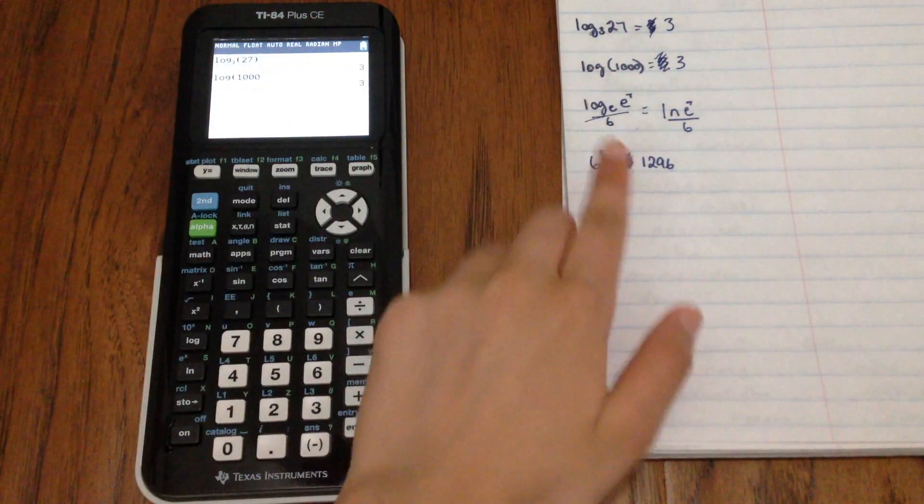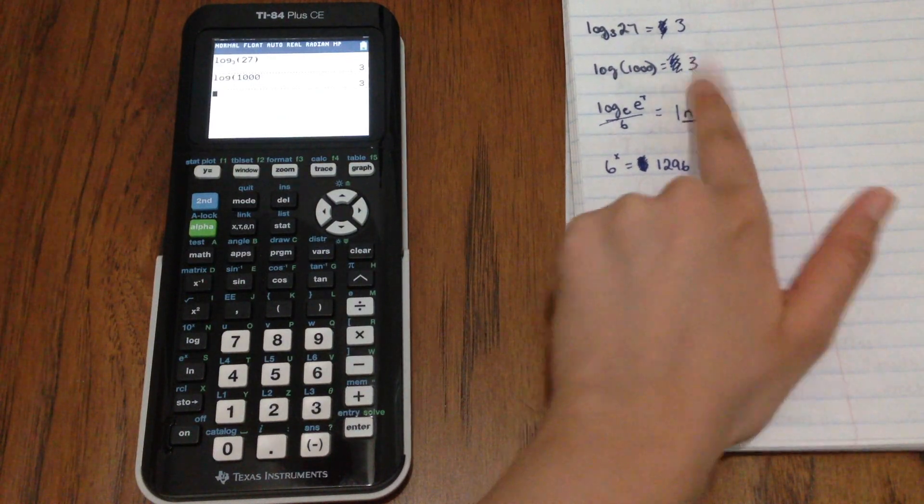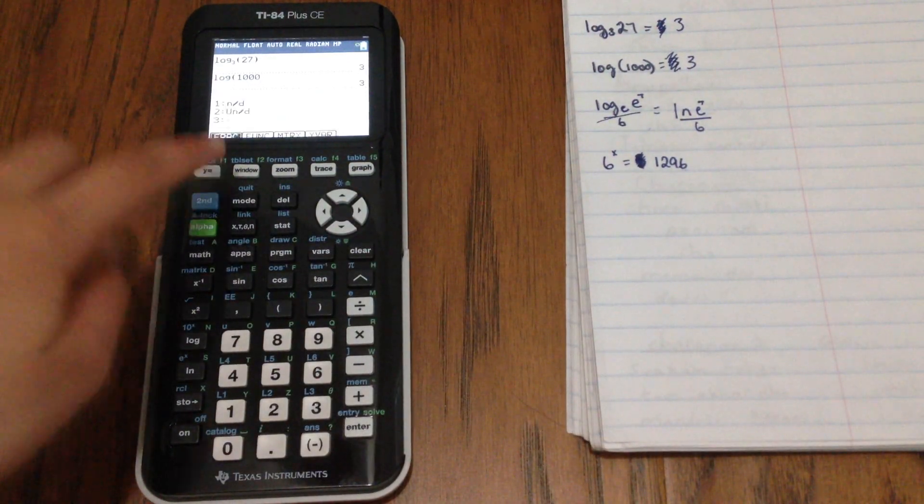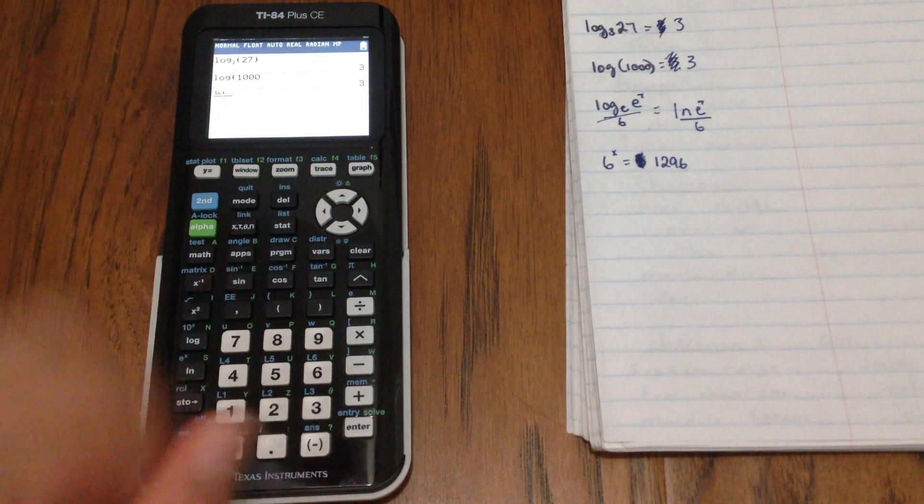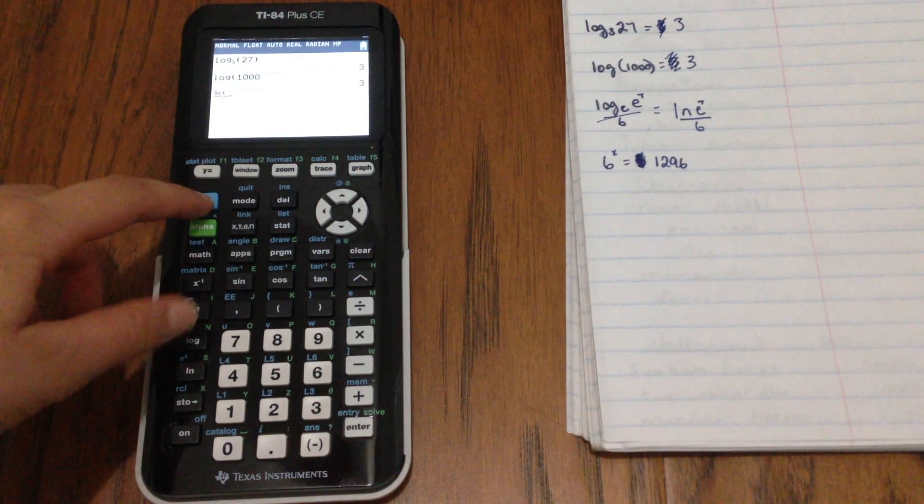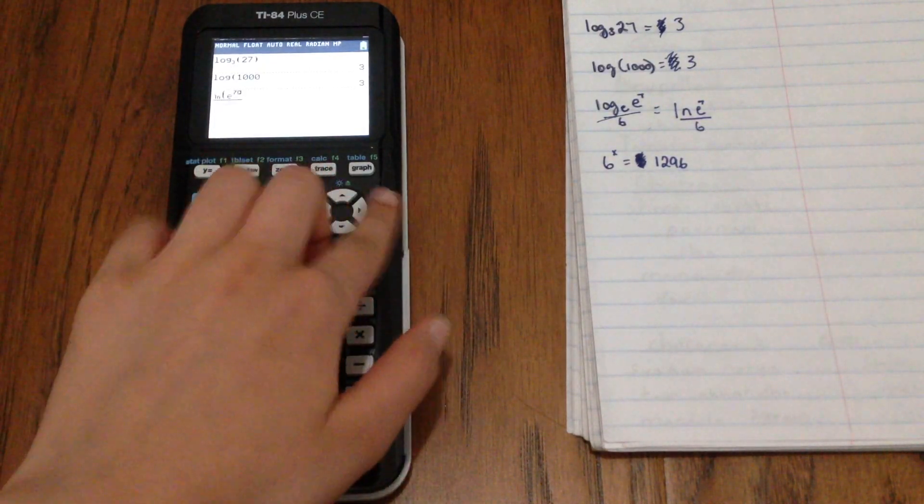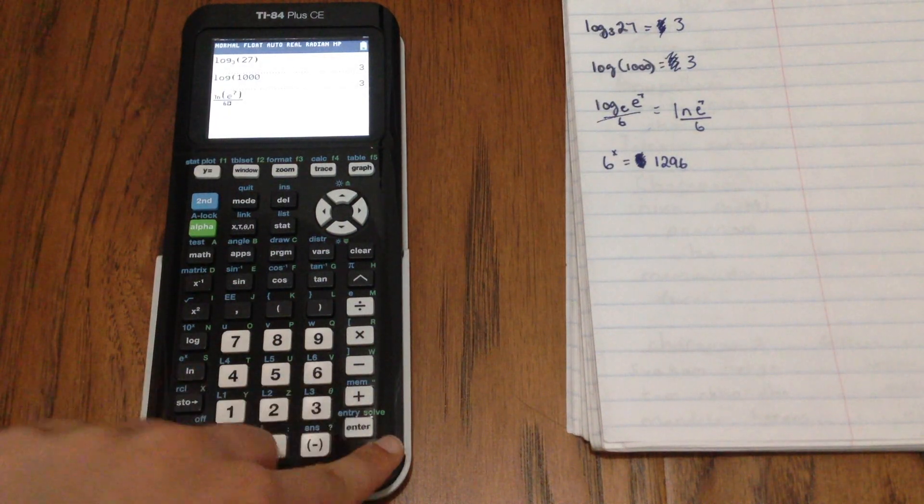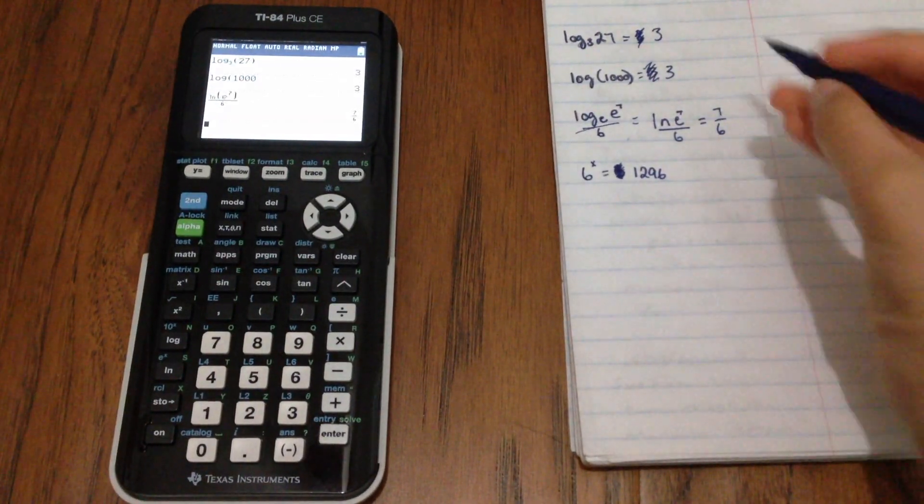And for this next one, I wrote it here as log with the base of e, which we know is a natural logarithm. So it would be ln e to the 7th over 6. So the way we would do this is we would use our handy dandy fraction template and use our button for that. And then you can see there's a way you can type in e. It's to go 2nd 0 to go to catalog and then scroll down until you find e. But what I discovered is you can also just do it by clicking 2nd ln to get e to the power of, in this case it would be 7. And then down here we can put 6. And we would get our answer as 7 over 6.